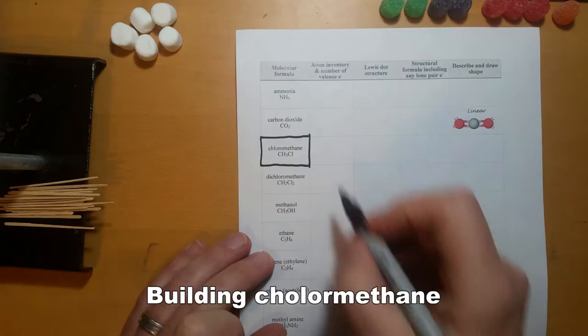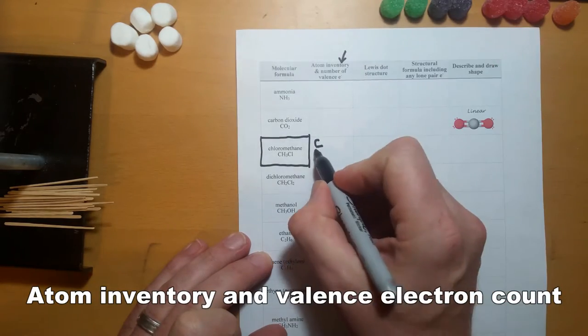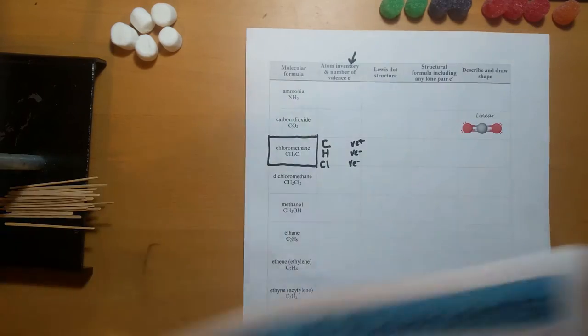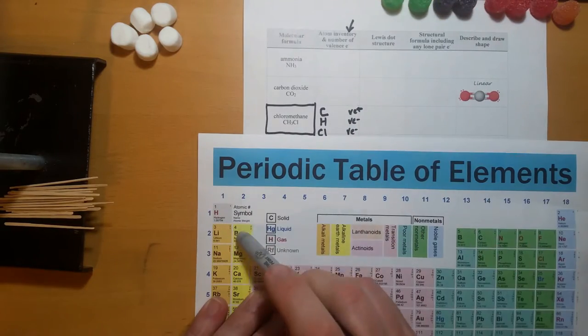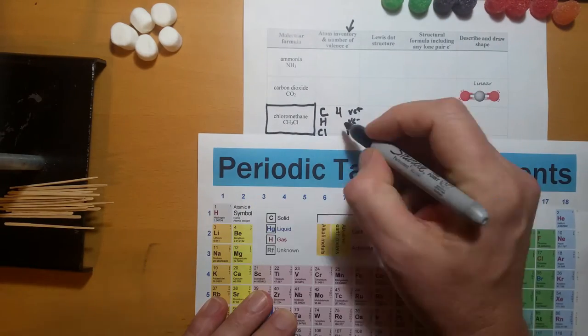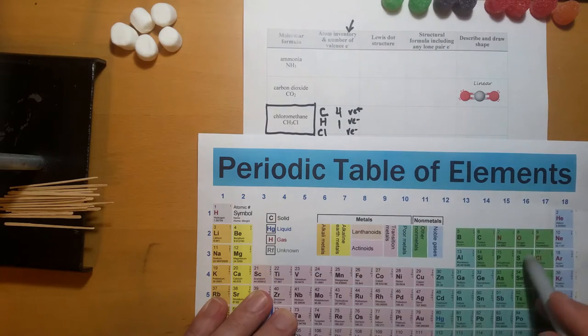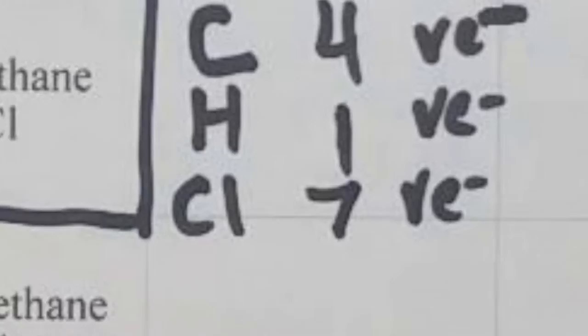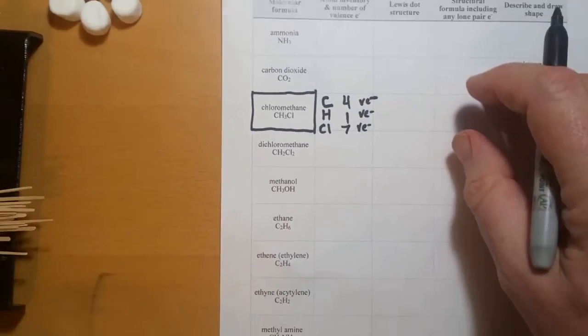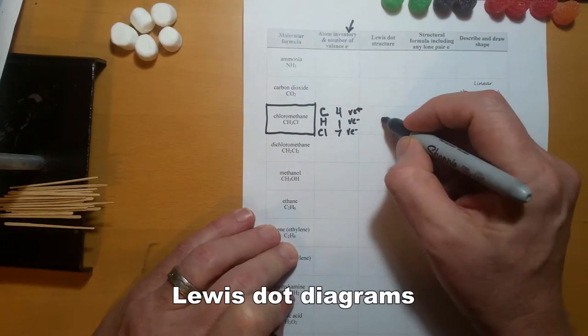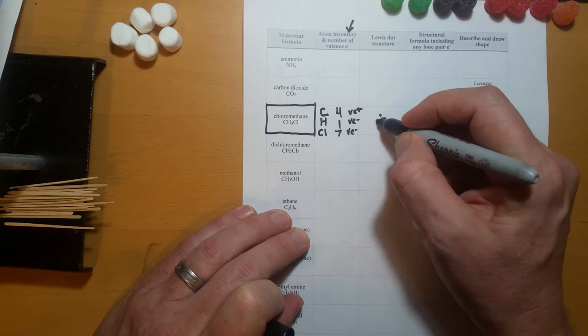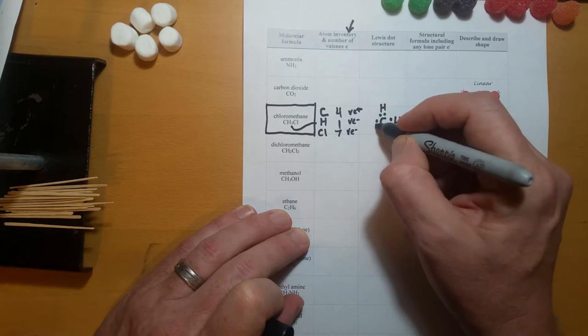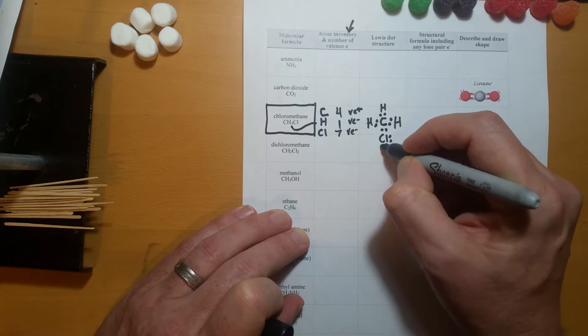Building chloromethane starts with an inventory of the elements and their valence electrons. Use a periodic table to determine the number of valence electrons for each element. Carbon has four valence electrons, hydrogen has one, and chlorine has seven. Lewis dot diagrams show four electrons equally spaced around carbon. Three hydrogen atoms can form one bond each.